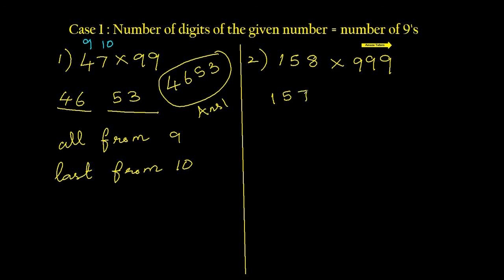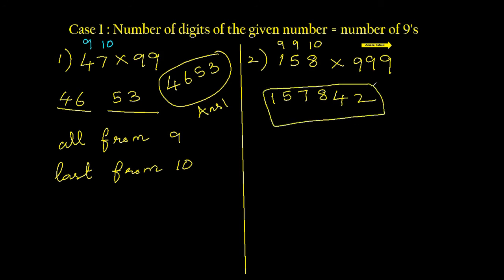Now for the second part, take away all from 9 and last from 10: 9 minus 1 is 8, 9 minus 5 is 4, 10 minus 8 is 2. Write it next to 157 — so the answer is 157842. Now let's do case two.